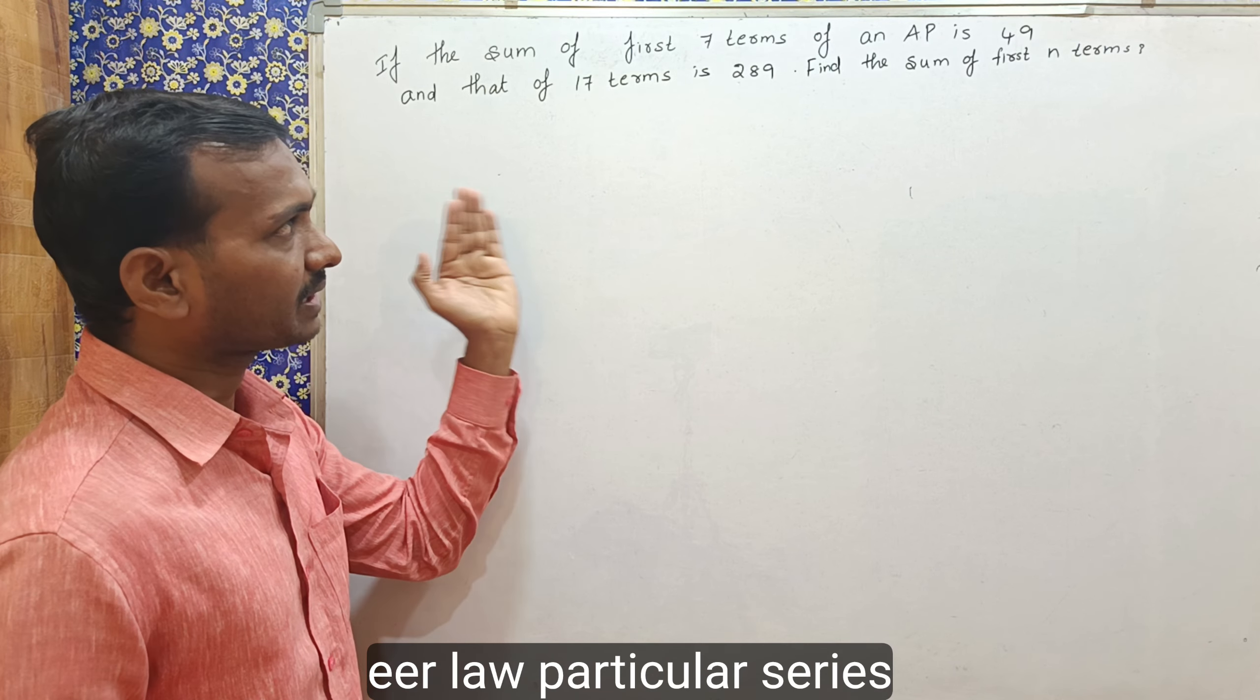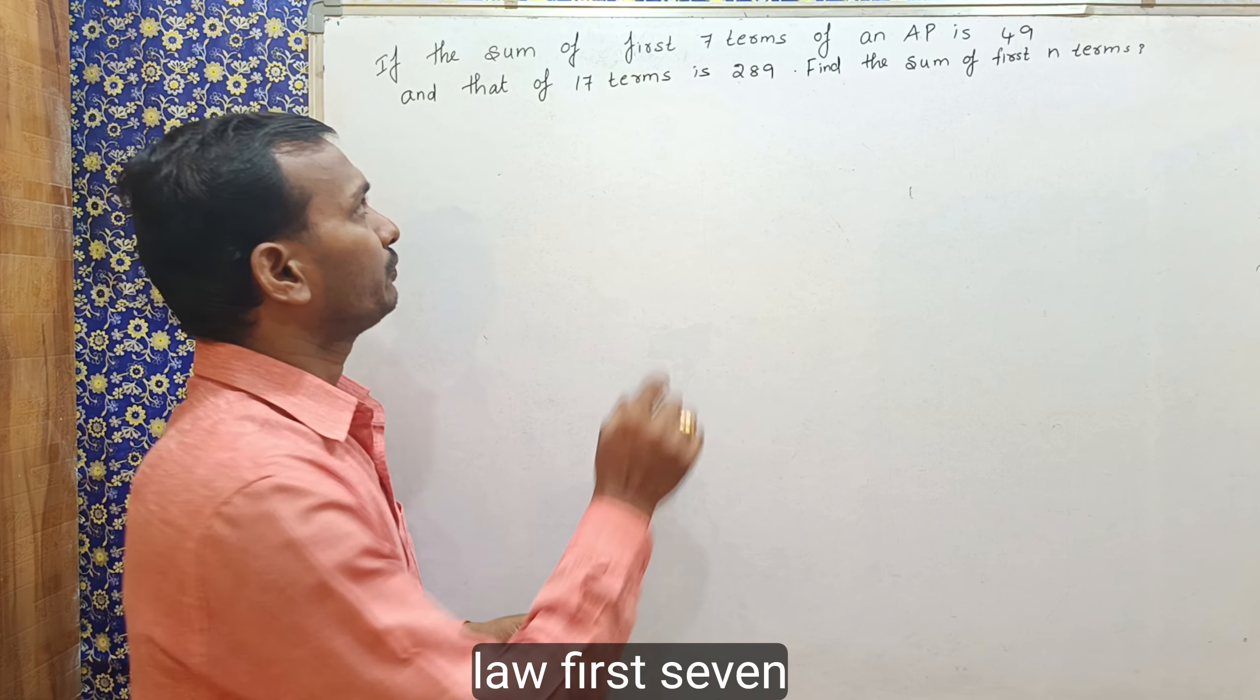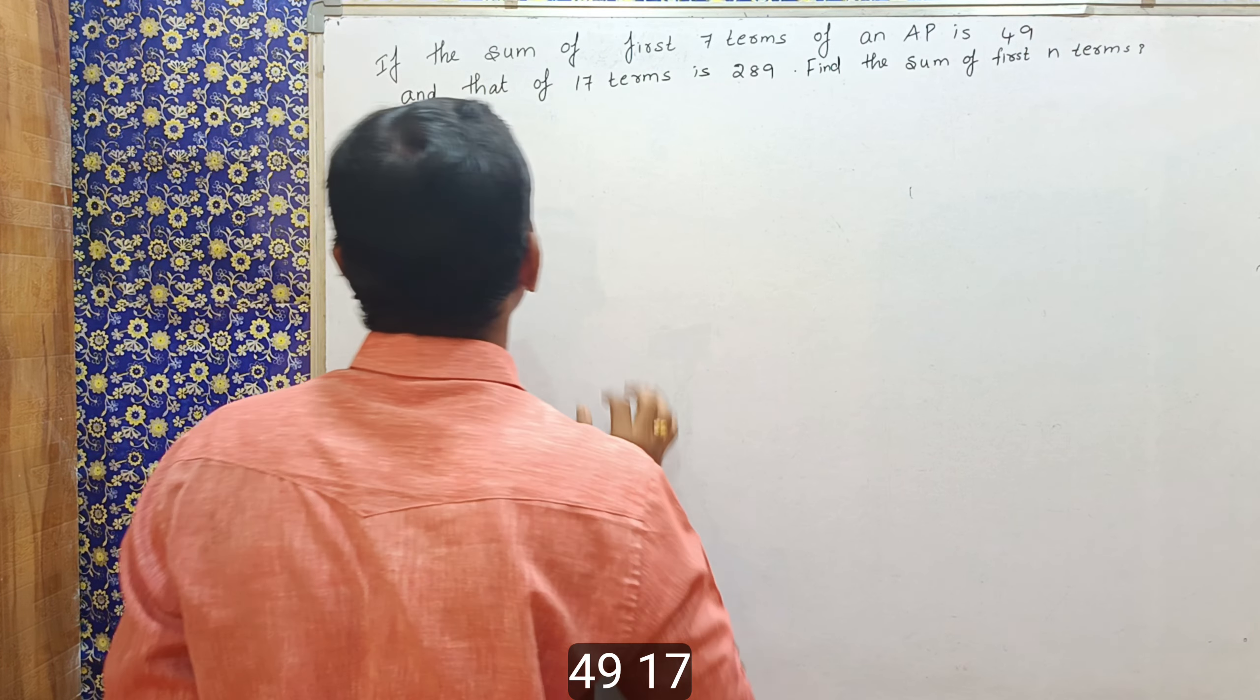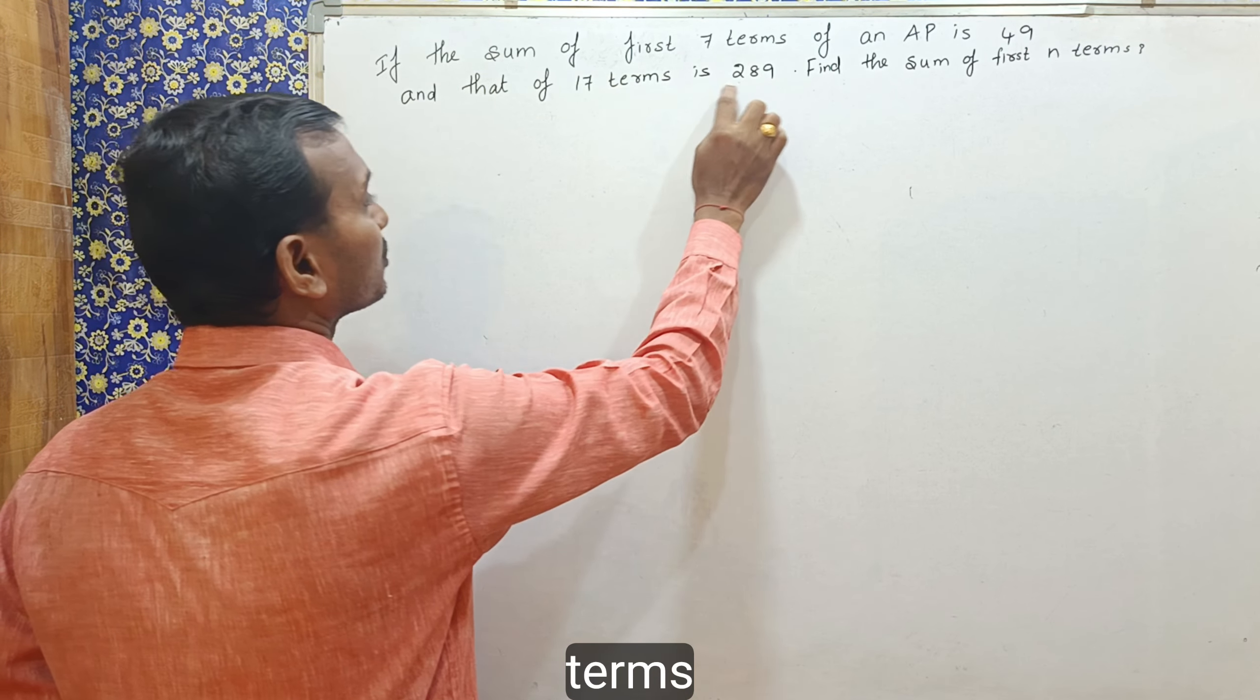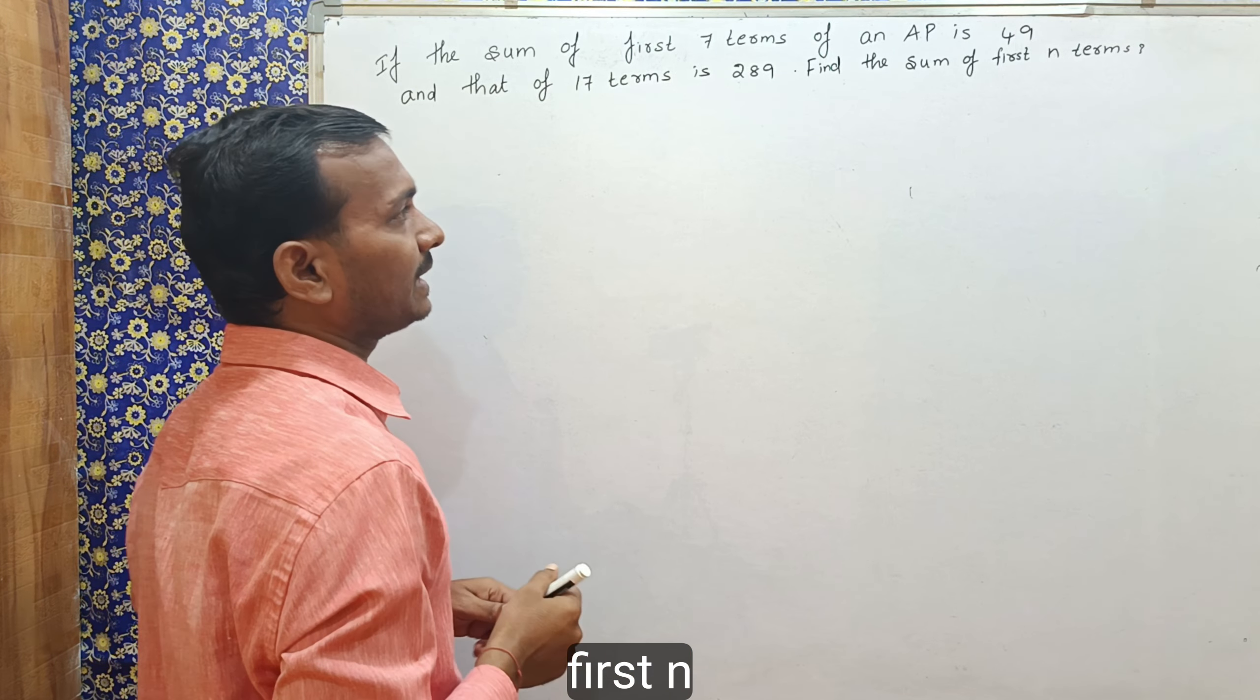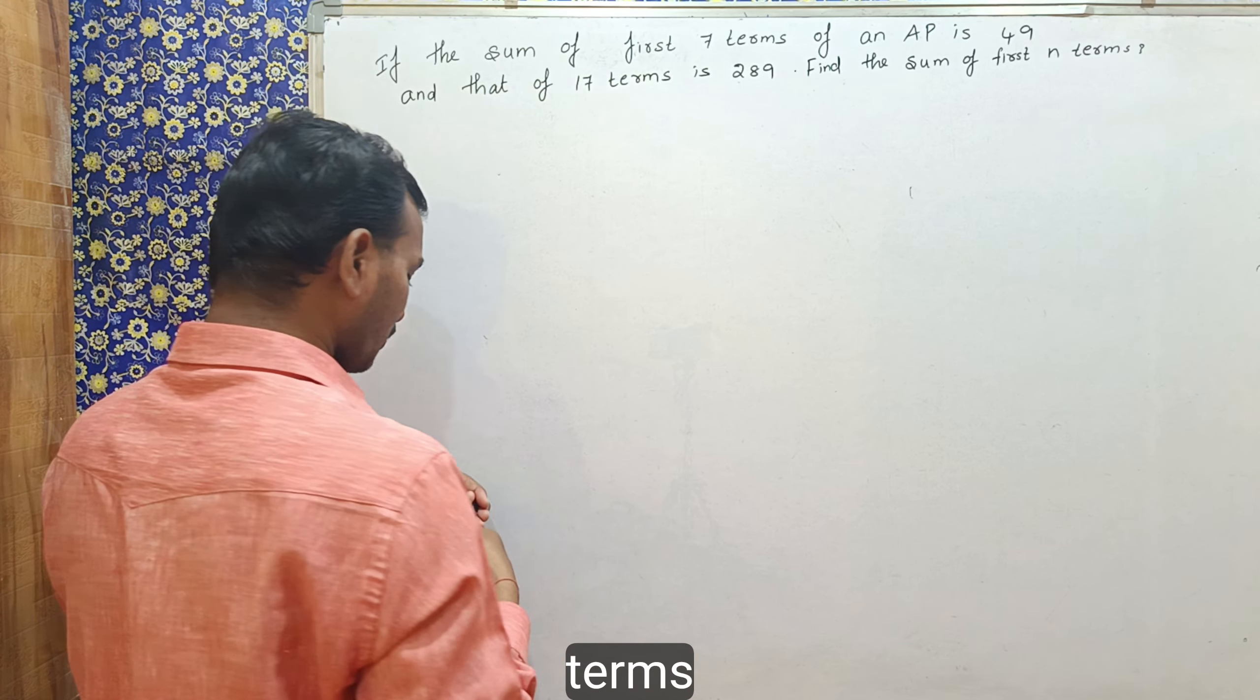This series below, this particular series below, so first 7 terms yukka sammho chesi 49. 17 terms yukka sammho chesi 289. What is the sum of first n terms?